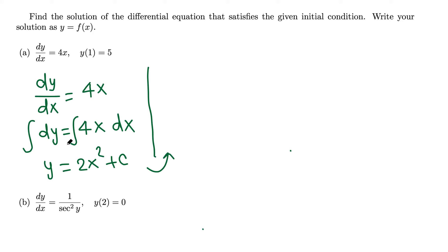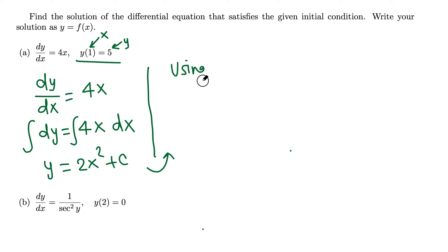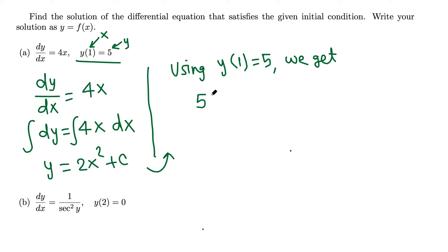This would have been the general answer, but we use the initial condition to determine the value of c. Here, y equals 5 when x equals 1. Using y(1) equals 5, we plug in: 5 equals 2 times 1 squared plus c.